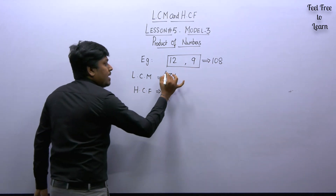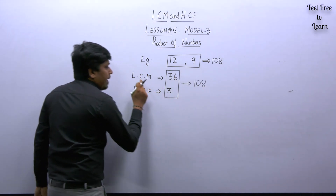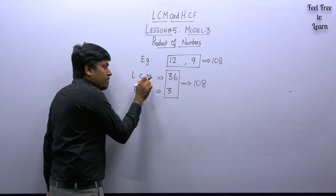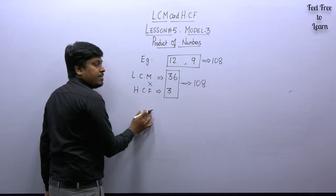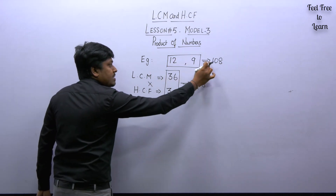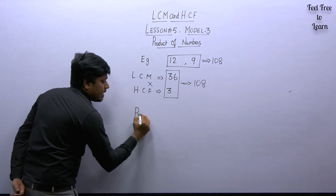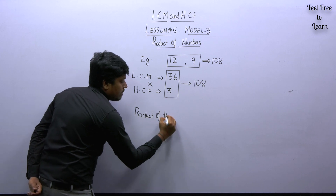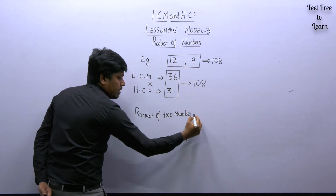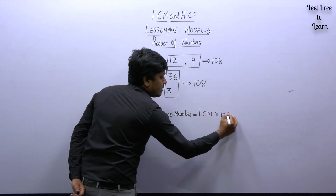Similarly, if you multiply the LCM and HCF, you also get 108. LCM is 36 and HCF is 3; 36 × 3 = 108. So the product of the two given numbers equals the product of LCM and HCF. That is the simple property: product of two numbers equals LCM × HCF.